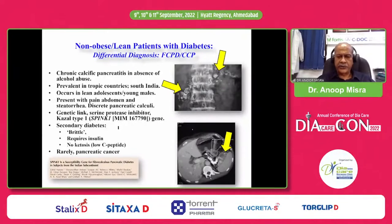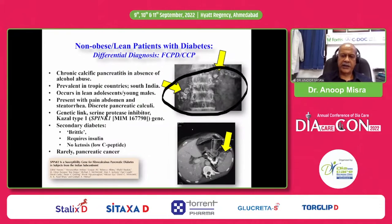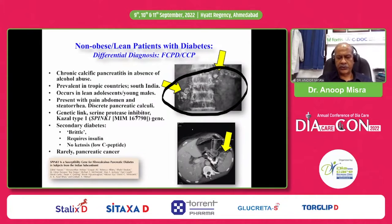Fibrocalculous pancreatic diabetes was found in 15% of the cohort from North India. These patients have recurrent abdominal pain, and you can see pancreatic calculi here. They are present in lean adolescent or young males. They have pain abdomen and steatorrhea, and there is a possible genetic link — Spink 1 is the gene investigated. Their diabetes is brittle, they require insulin, and though they may have low C-peptide, there is no ketosis. Rarely, pancreatic cancer has been reported in one patient with fibrocalculous pancreatic diabetes. You must have a plain X-ray done in any patient with abdominal pain and diabetes and look for pancreatic calcification.